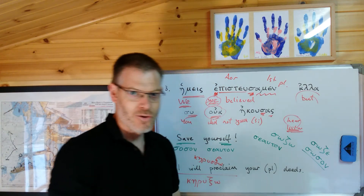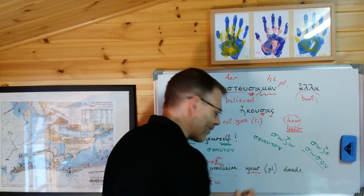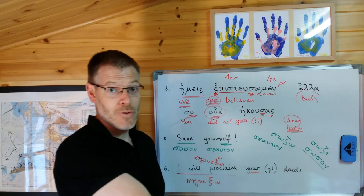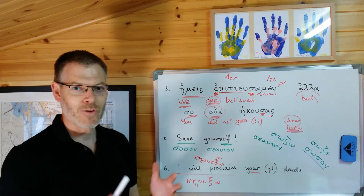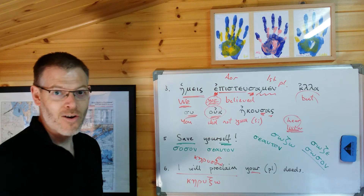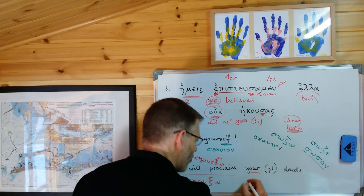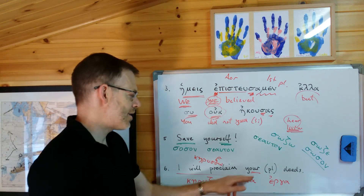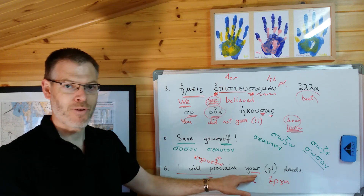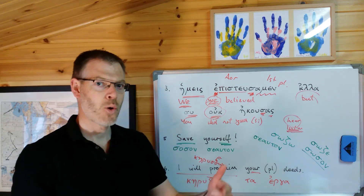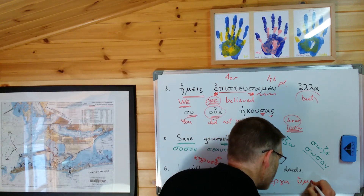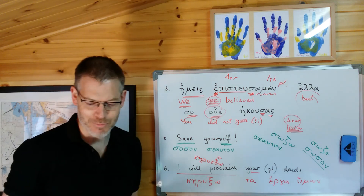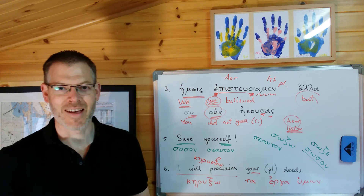Now how do you do 'your deeds'? Well, if you're trying to translate something possessive, the most common way is just to use the appropriate pronoun — think of this as 'the deeds of you.' Don't try to find a word for 'your'; think 'the deeds of you.' Deeds or works is ta erga. And the second person plural genitive pronoun — from su: su, se, su, soi, humais, humas, humon. So keruxo ta erga humon: I will proclaim your deeds.